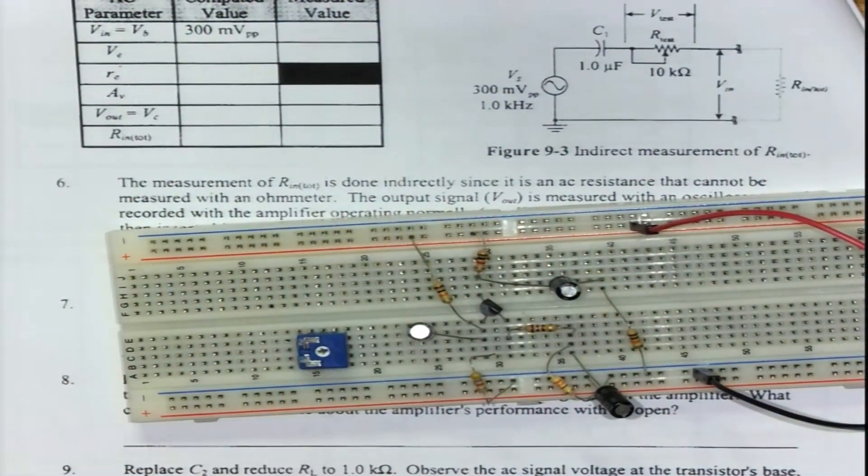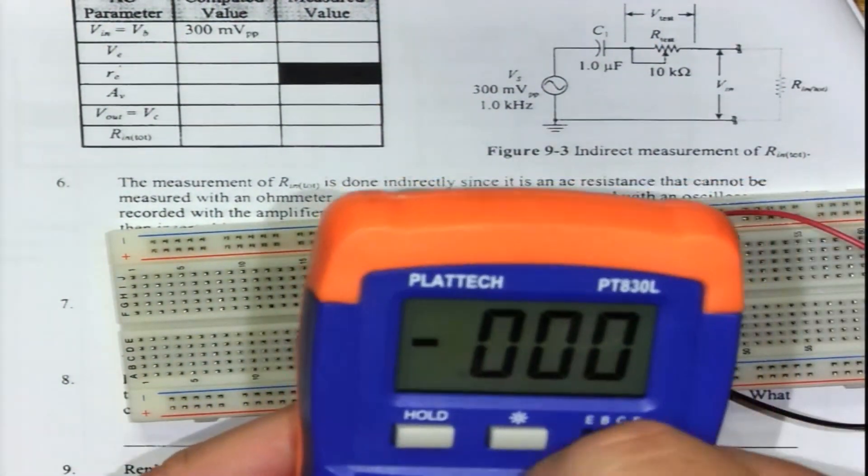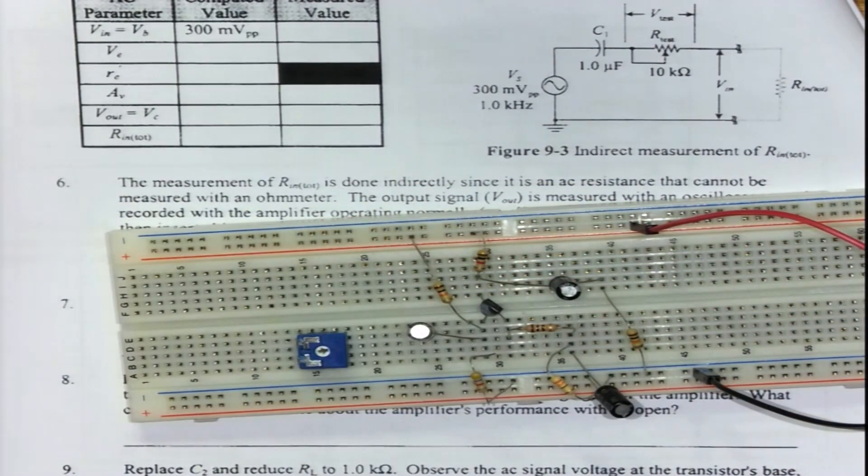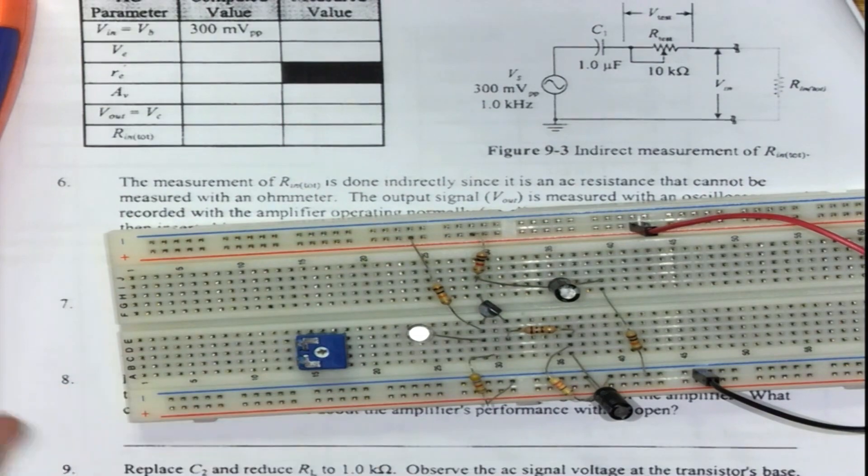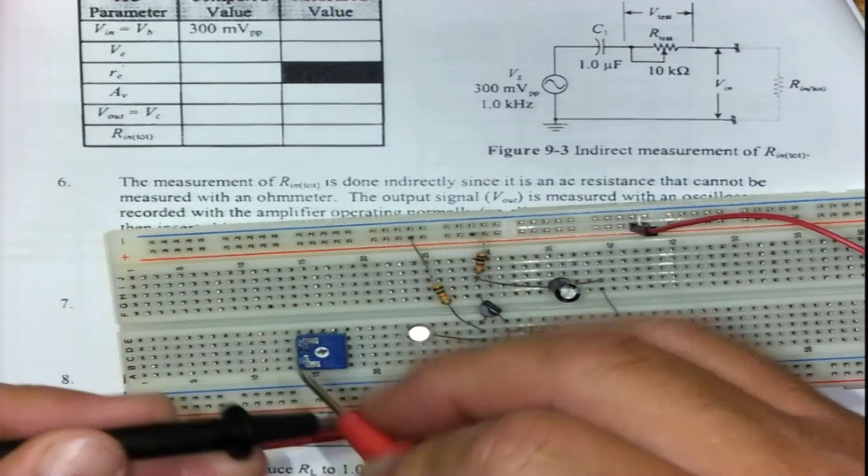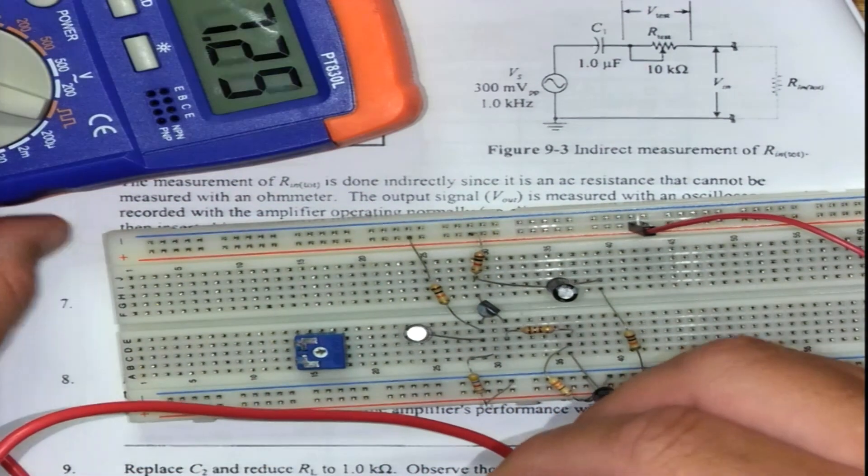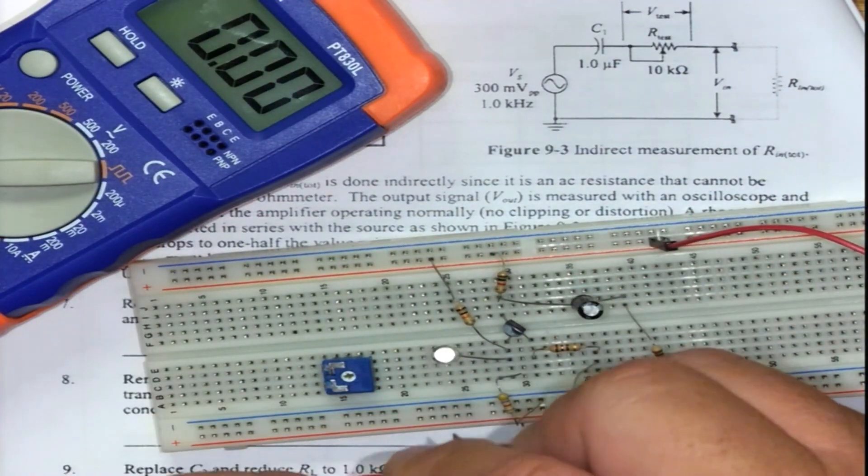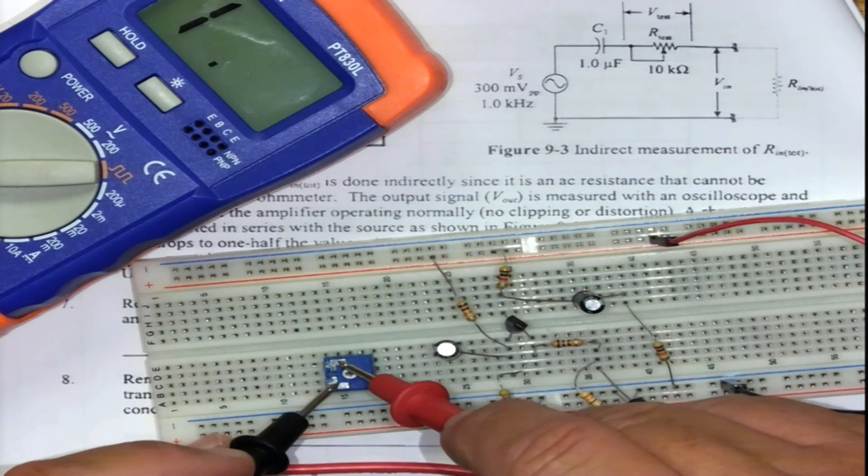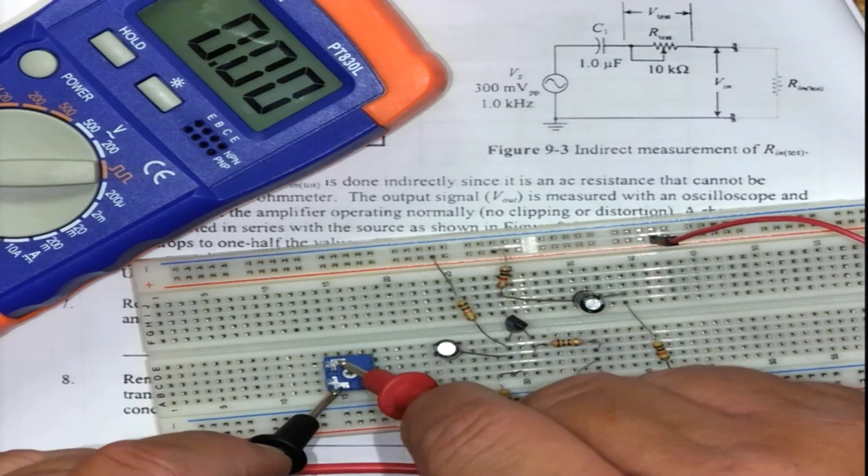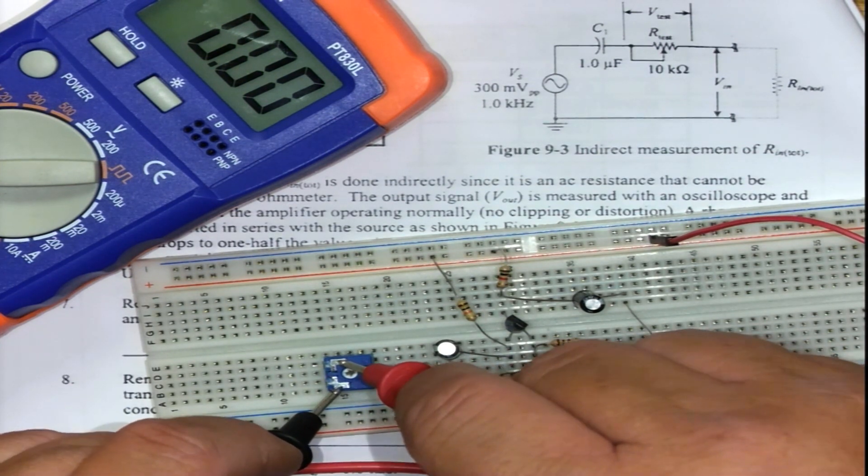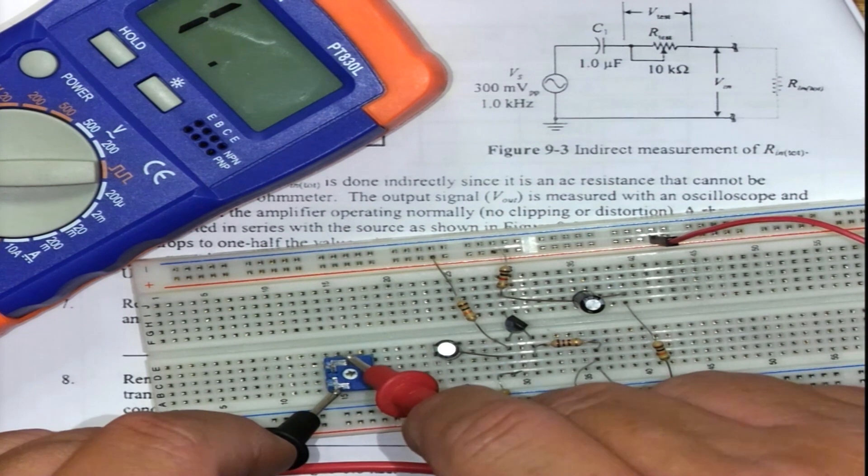I can prove it. Get the multimeter here, put it on ohms. It is a 10 kilo ohm resistor and just to show you guys there it is. If I put it like this and measure from here to here, I get a short circuit. That's not what we're looking for ladies and gentlemen.